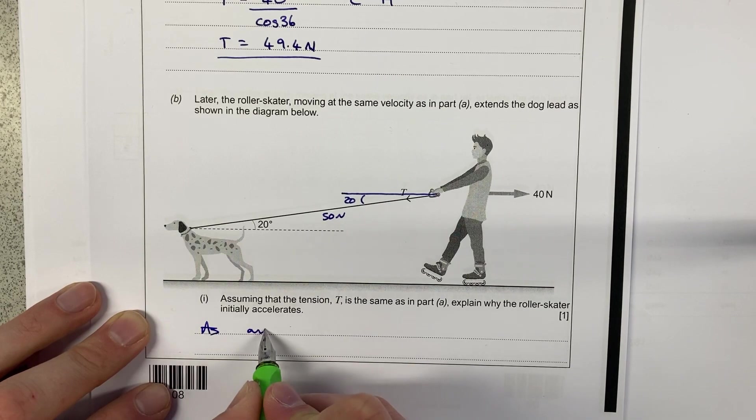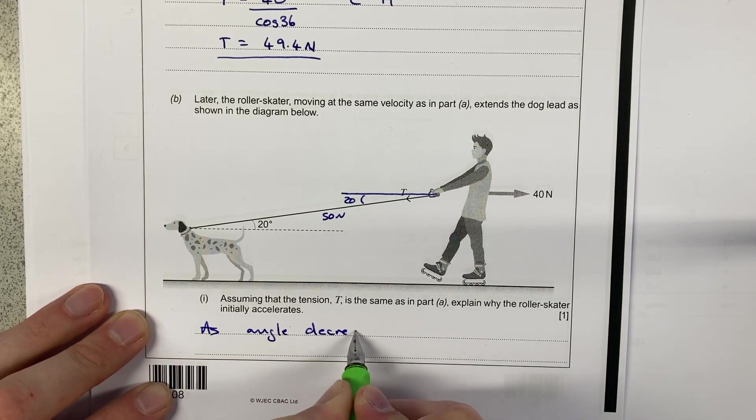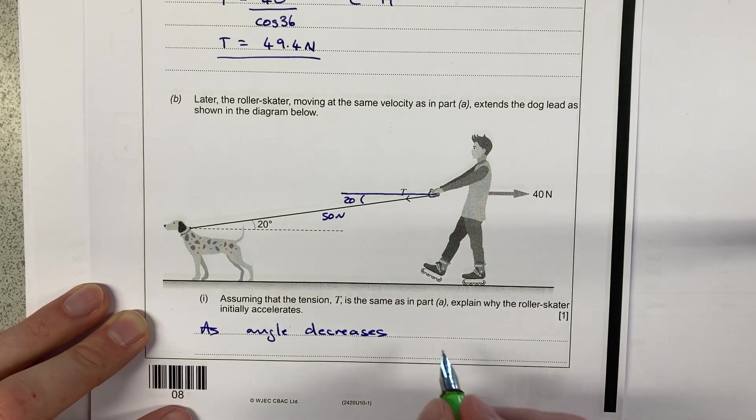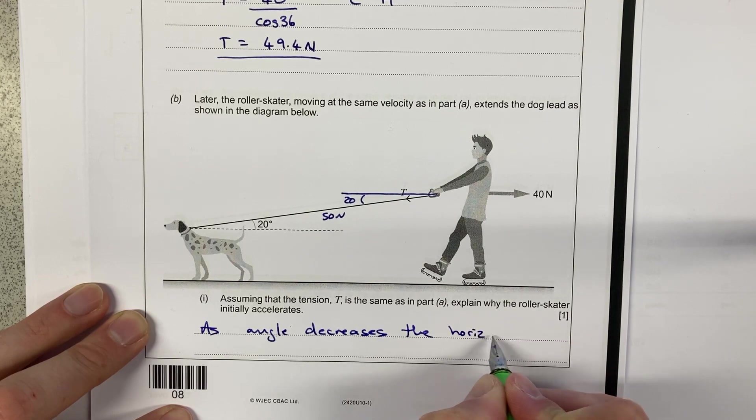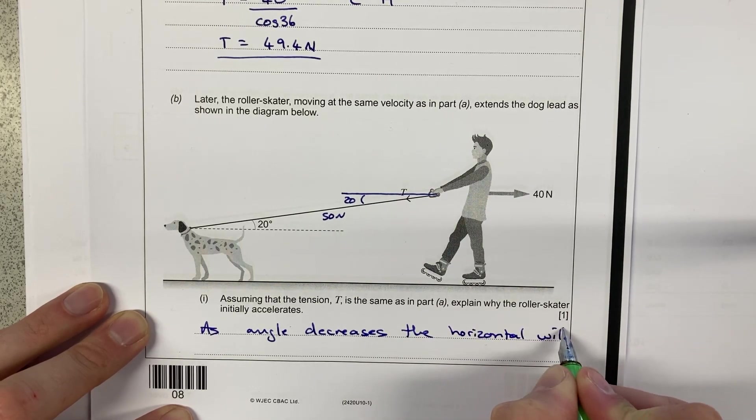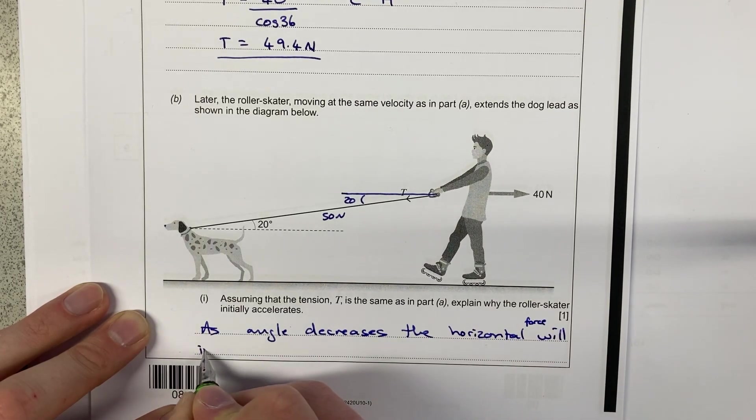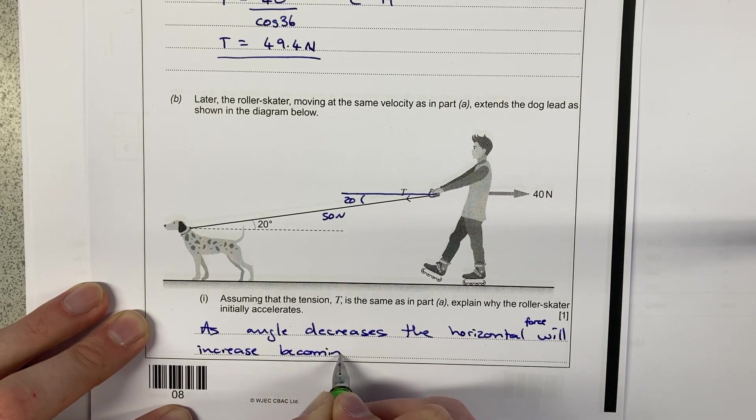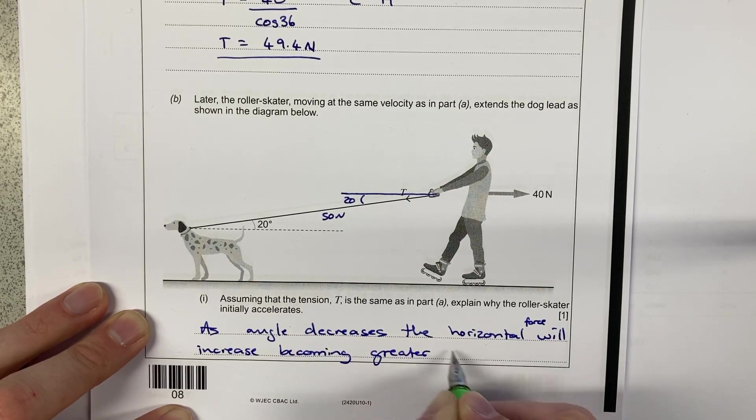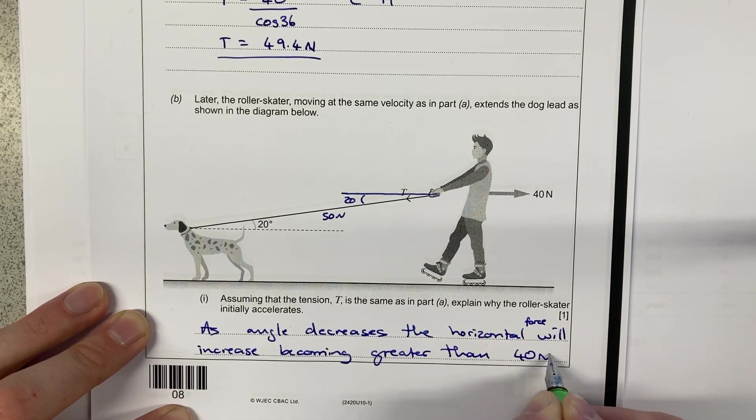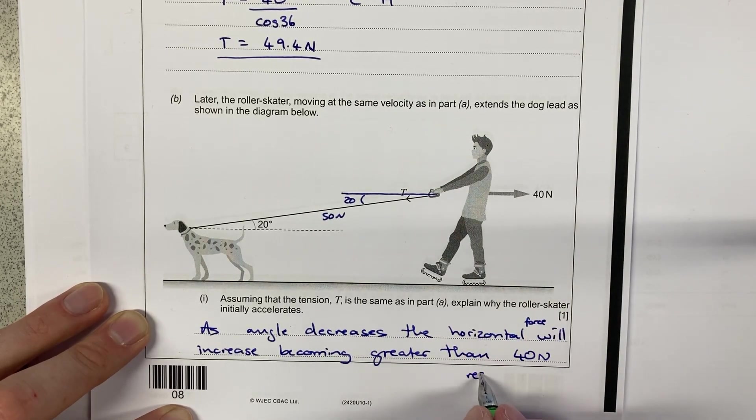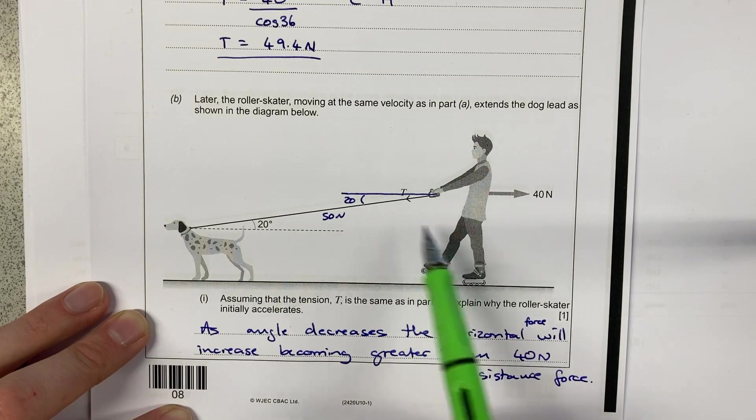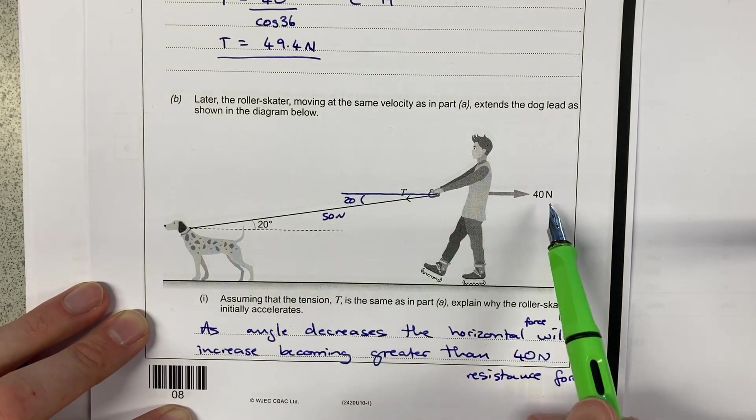So as angle decreases, the horizontal force will increase, becoming greater than the 40 newtons, what would you call that, like a resistance force. So initially it accelerates because this force is much larger than that 40 newtons there.